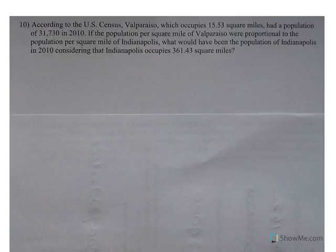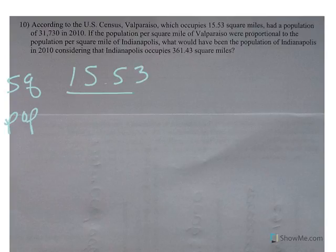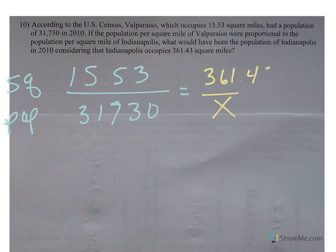Number 10. According to the U.S. Census, Valpo has some square miles and a population. So for Valpo, we have 15.53 square miles, population of 31,730. If the population per square mile of Valpo were proportional to Indianapolis, what would have been the population of Indianapolis if they occupy 361.43 square miles? This is why I start with words, to make sure I have things in the right order.